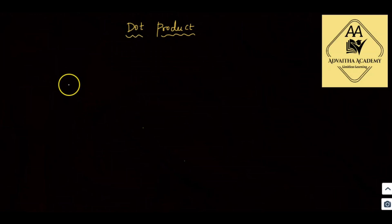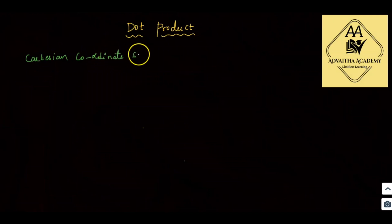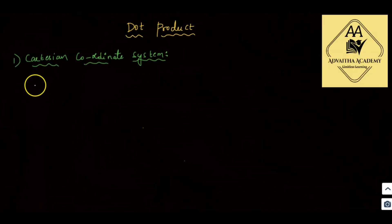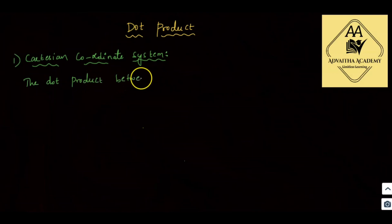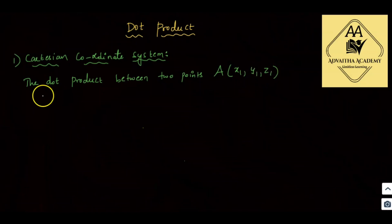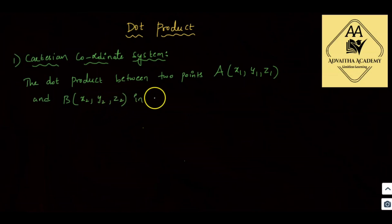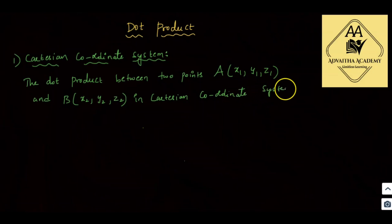We already did the Cartesian coordinate system for the dot product. So the point is that we will discuss the Cartesian coordinate system first. For the Cartesian coordinate system, the dot product between two points A (X1, Y1, Z1) and B (X2, Y2, Z2) in the Cartesian coordinate system is given by: